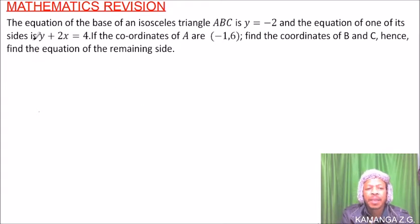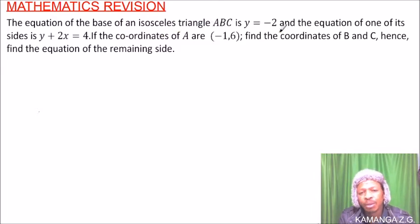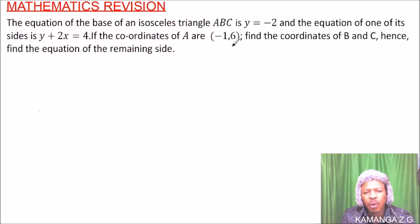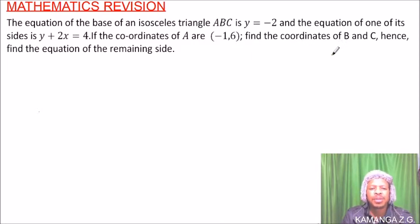The question says: the equation of the base of an isosceles triangle ABC is y = -2, and the equation of one of its sides is y + 2x = 4. If the coordinates of A are (-1, 6), find the coordinates of B and C, and hence find the equation of the remaining side.